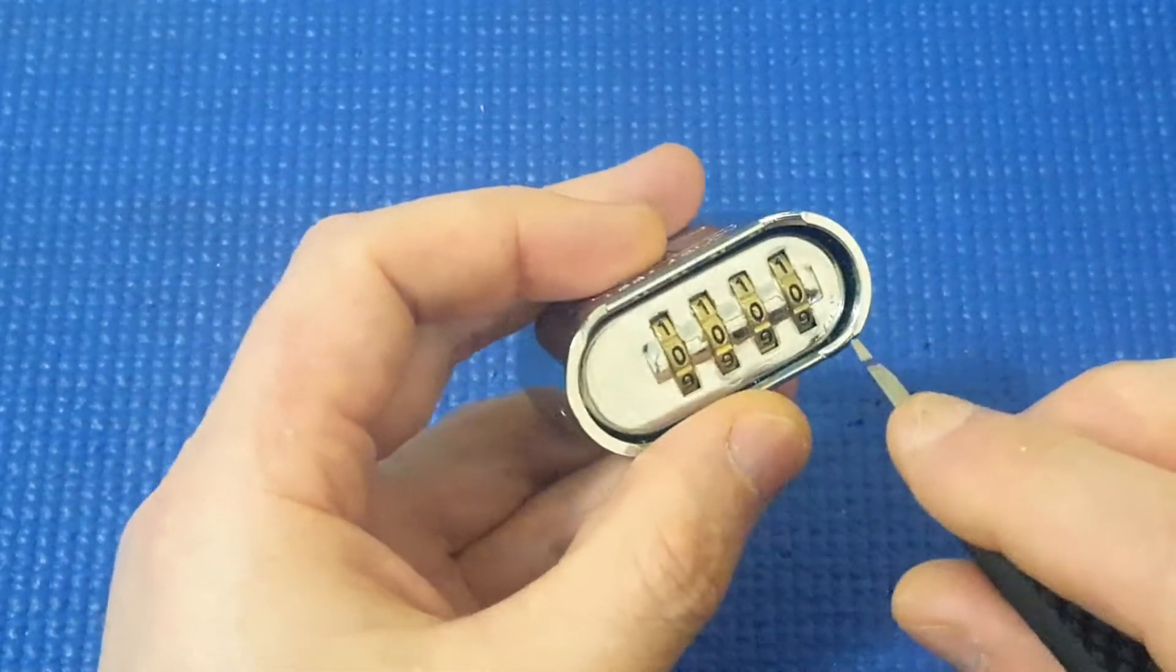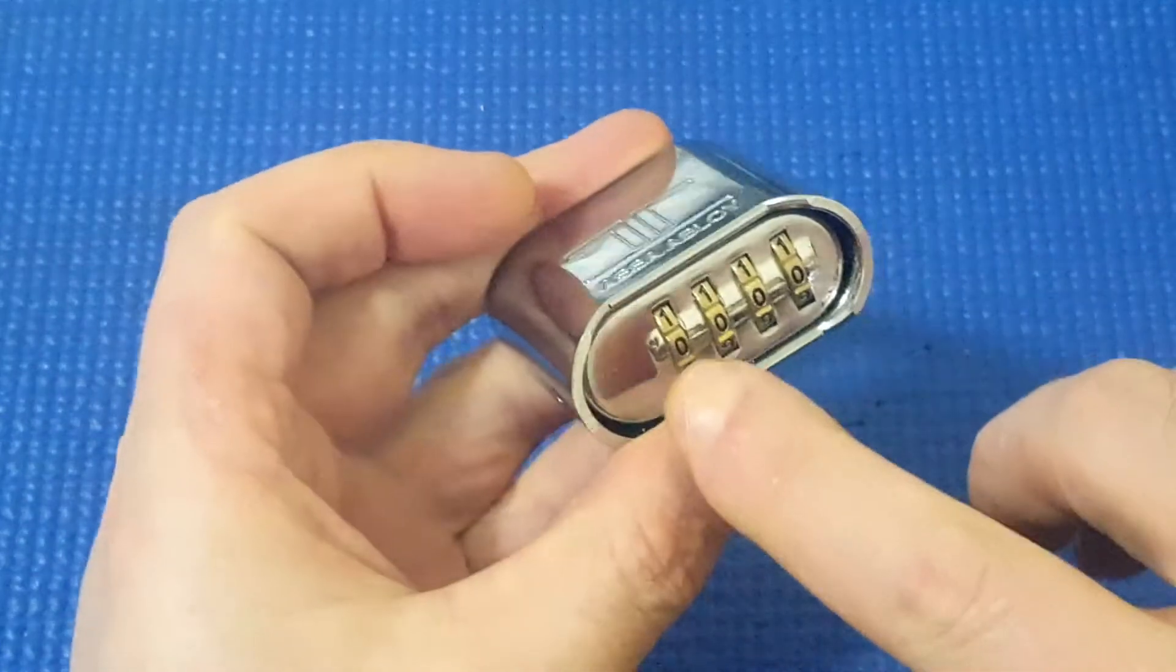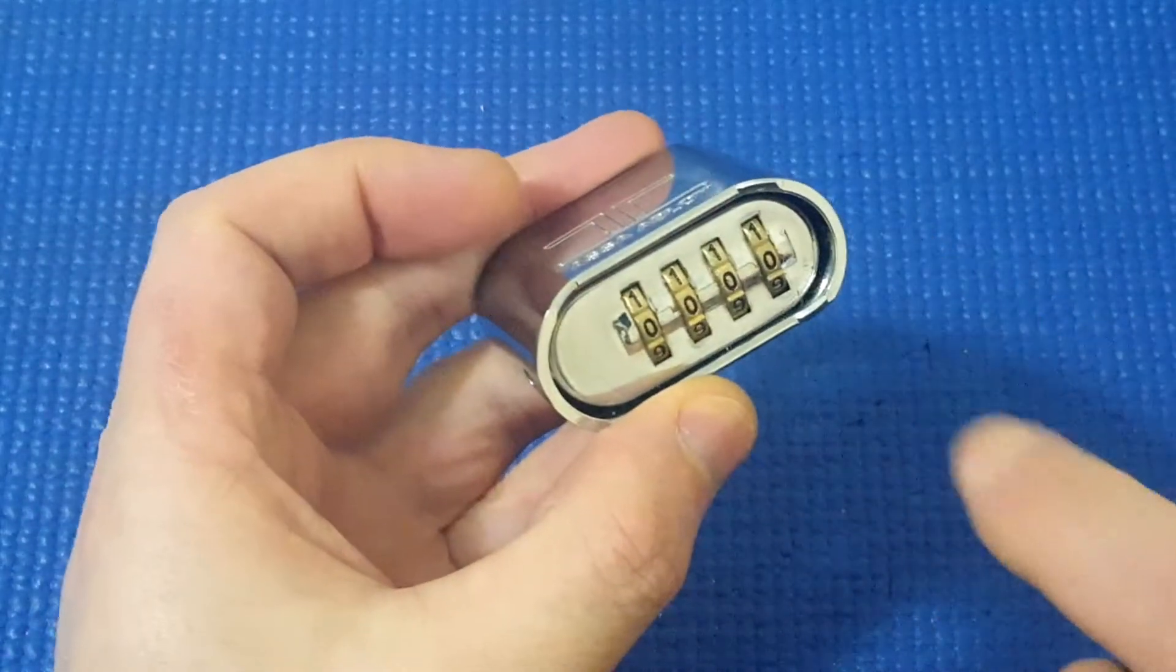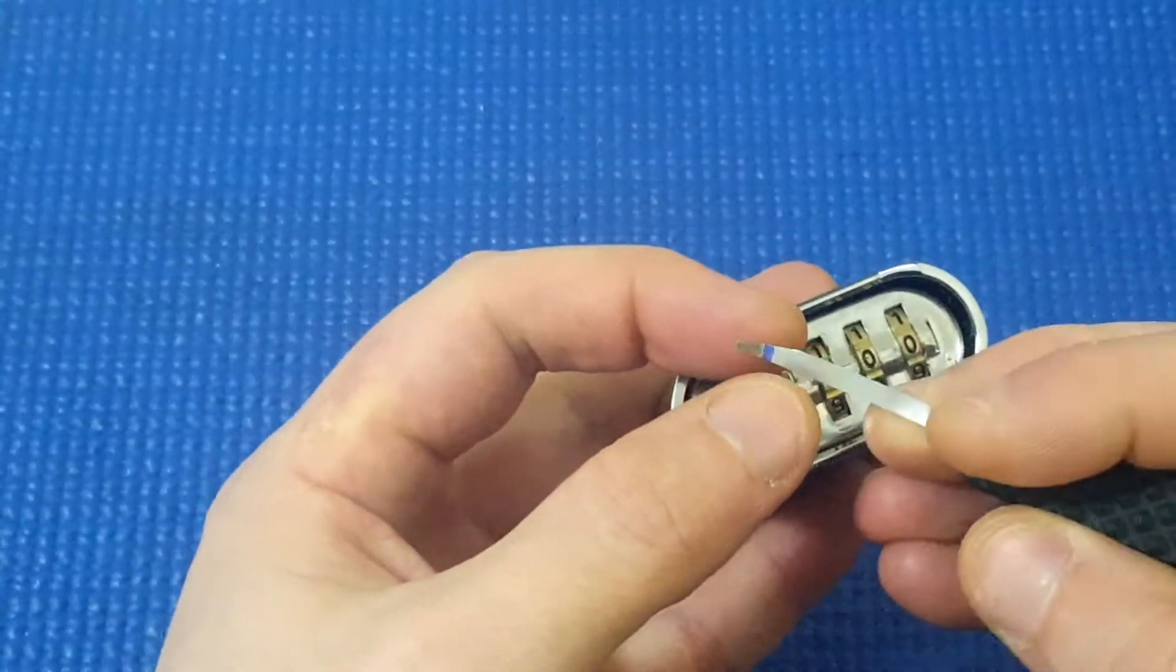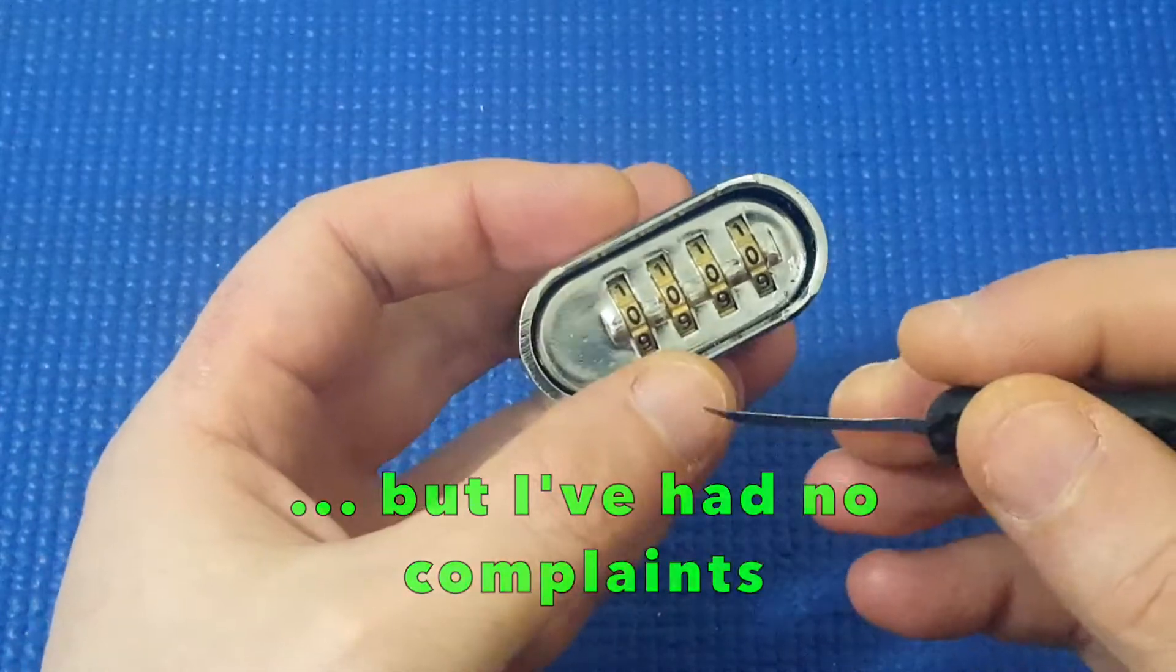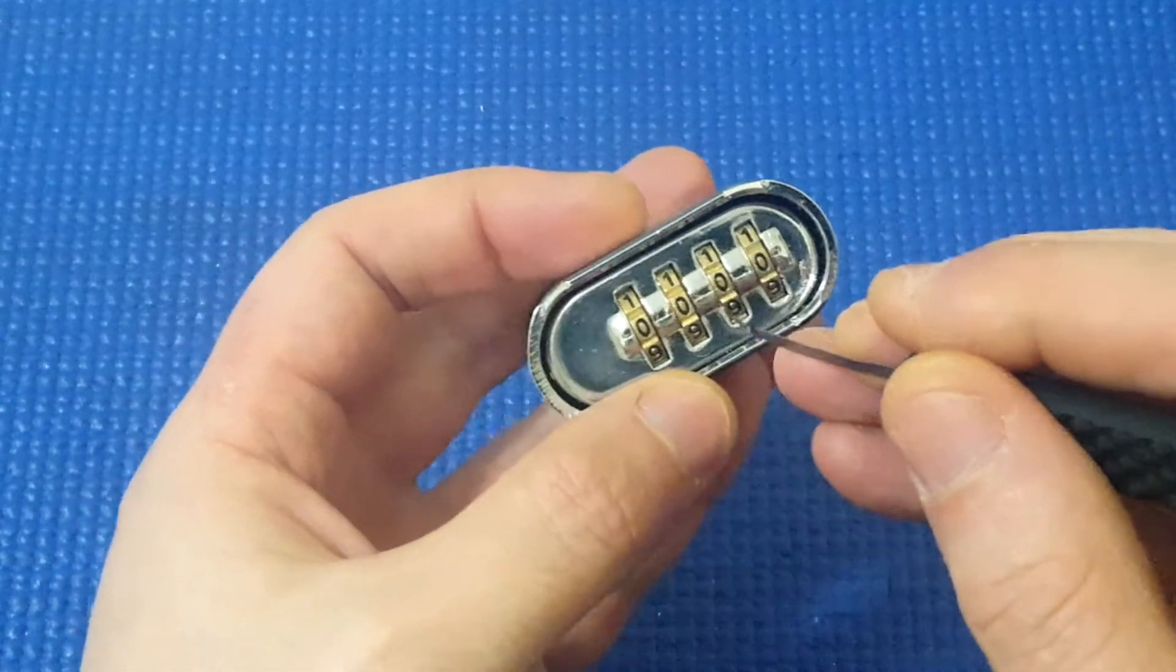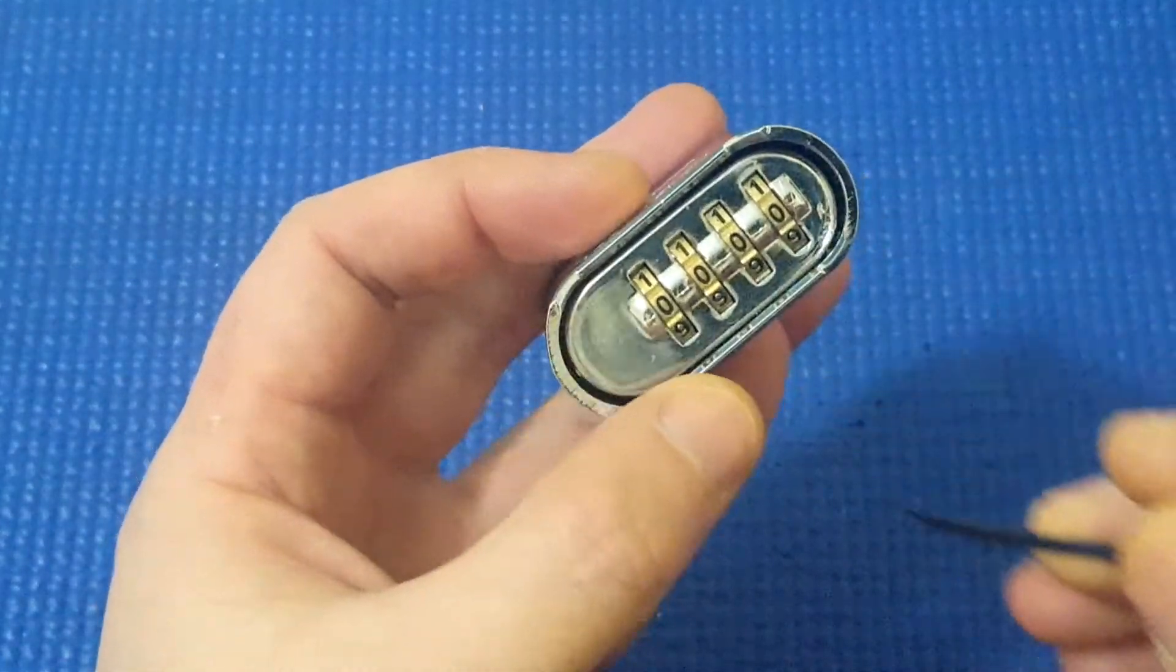But today I want to show a probing method to decode an unknown combination. This has been set to a random combination by my wife using a random generator and I've placed a mark on my decoder. Now my shaft is a little bit bent but it's actually an advantage in this case because I want the probe to be a little bit to the right as I'm probing in between the wheels.